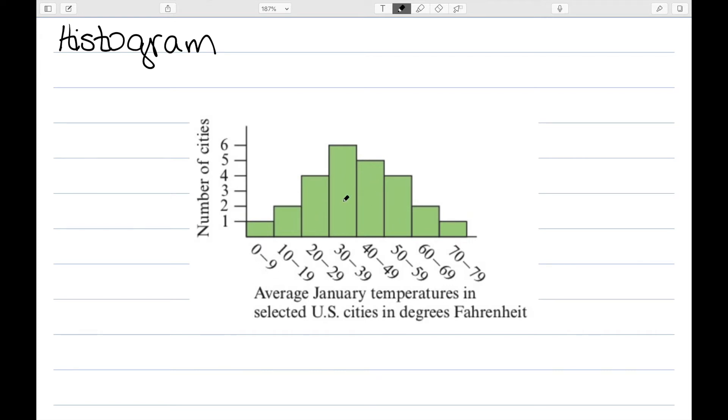So this is a histogram to represent the same dot plot I had before. The x-axis can either be individual numbers or these groups of numbers, and this is going to be very similar to a bar graph.